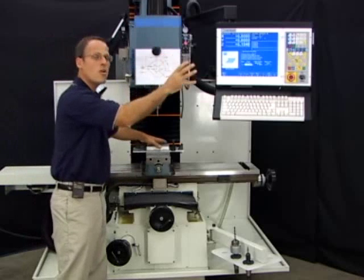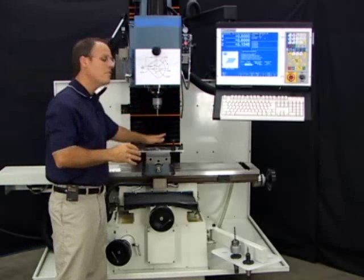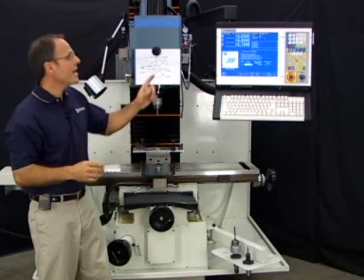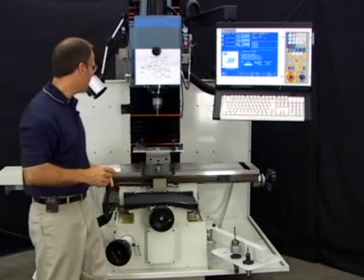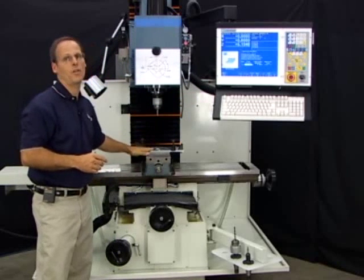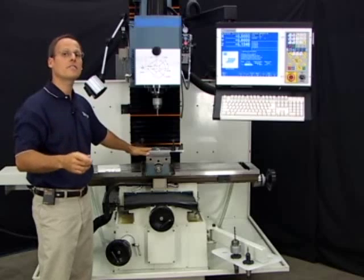Well we need to get our program lined up with the fixture plate. So I need to have the XY zero position of the DRO line up with the circular pocket in my fixture plate. Let me go show you how that's done.